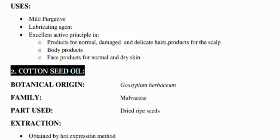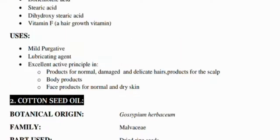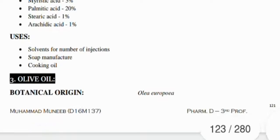Another oil is cotton seed oil, known as Gossypium herbaceum, its family is Malvaceae, and dried ripe seeds are the part used. It is used as a solvent for a number of injections in manufacturing and also as a cooking oil.